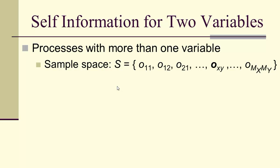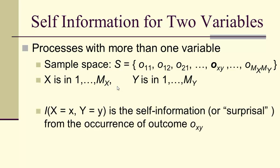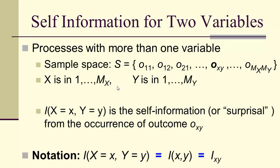Now suppose we have processes with more than one variable. Our sample space is doubly indexed: x goes from 1 to M_x and y from 1 to M_y. The self-information from x and y taking on values little x and little y is the self-information of the outcome O_{x,y}. Our notation is that the self-information can be written as a function I(x, y).